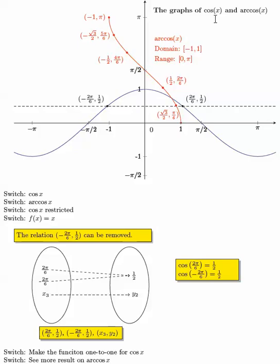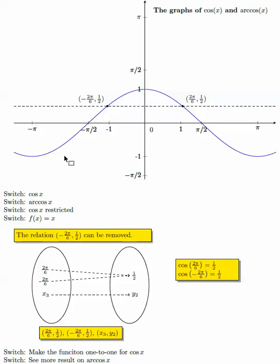In this lecture, we will talk about the inverse function of cosine x, which is denoted by arc cosine x. Let's first look at the graph of cosine x.